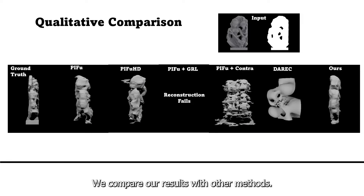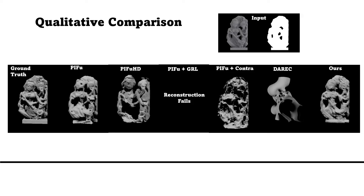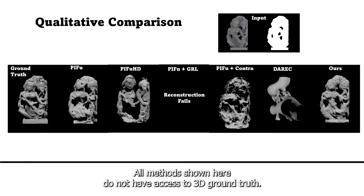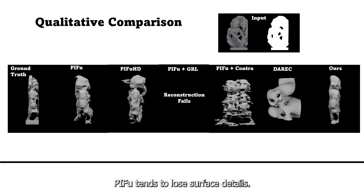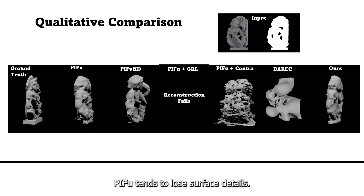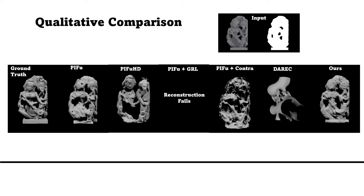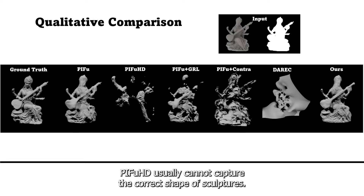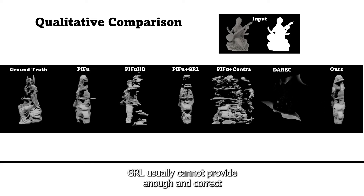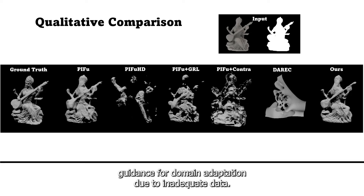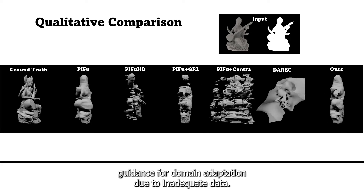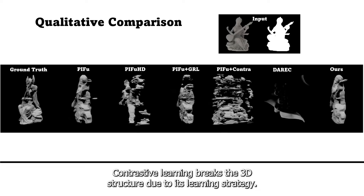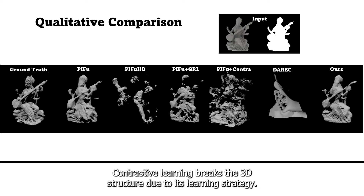We compare our results with other methods. All methods shown here do not have access to 3D ground truth. PFU tends to lose surface details. PFU HD usually cannot capture the correct shape of sculptures. GRL usually cannot provide enough and correct guidance for domain adaptation due to inadequate data. Contrastive learning breaks the 3D structure due to its learning strategy.